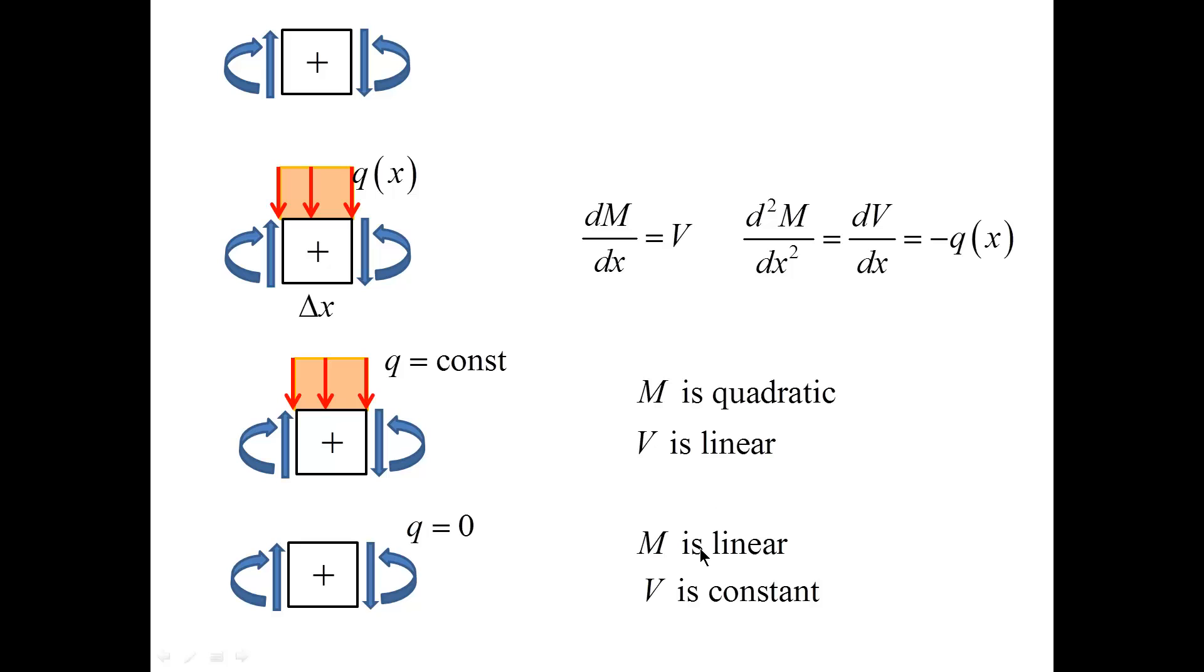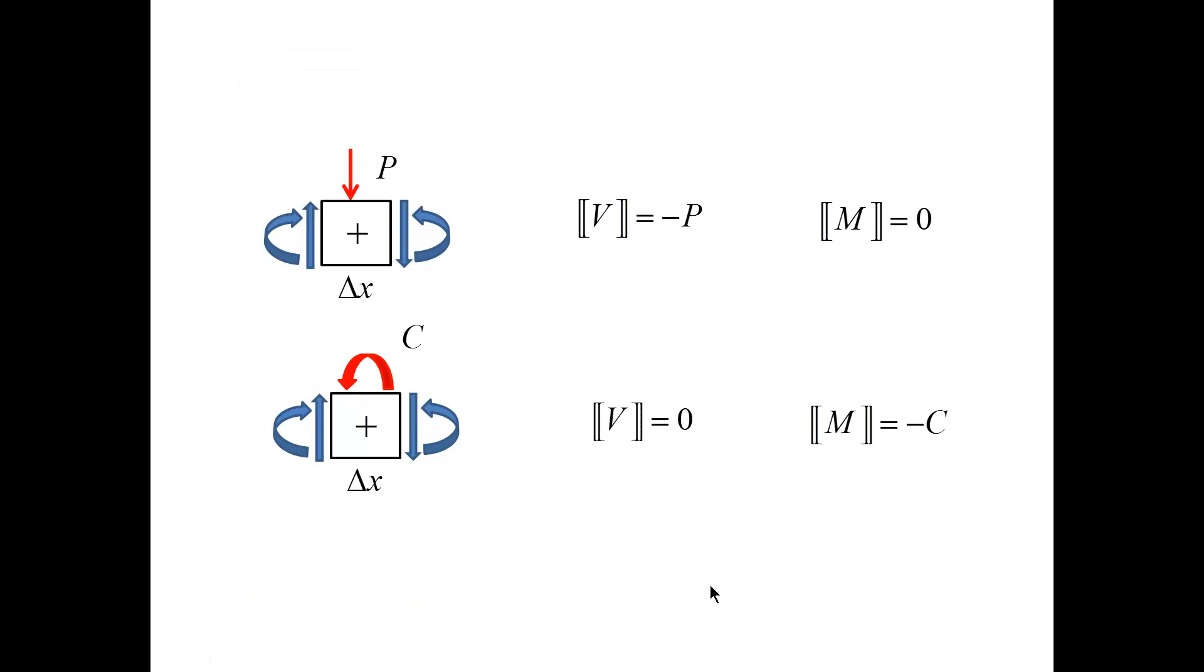If q is equal to 0, M is linear and V is constant. These relationships involve jumps, and they are applicable to situations when we have concentrated forces and couples. In the first case, we have a jump in the shear force and no jump in the bending moment. In the second case, we have no jump in V and there is a jump in the bending moment.